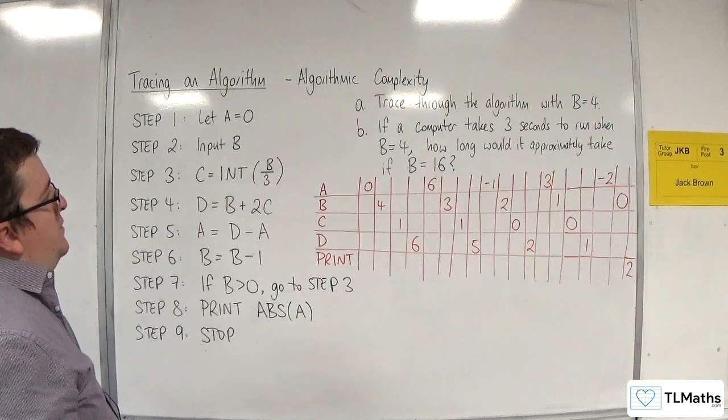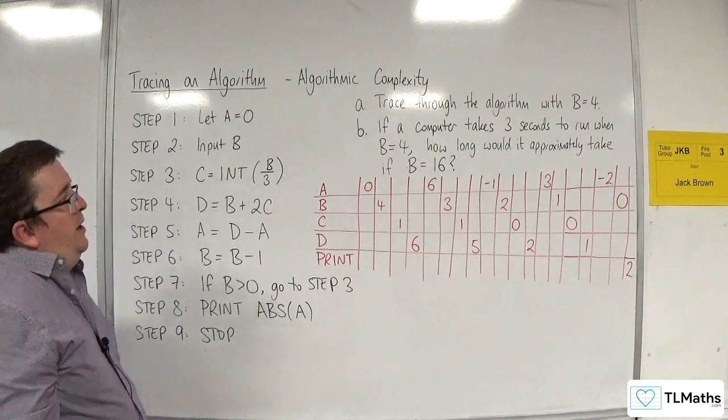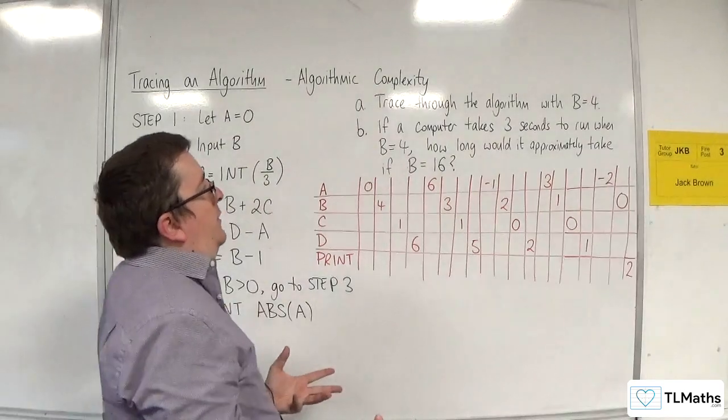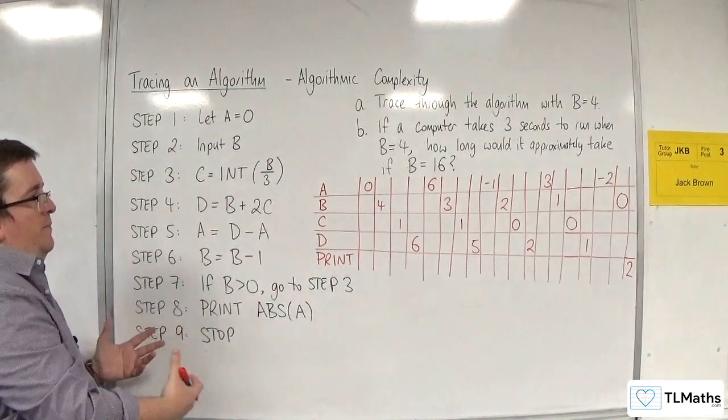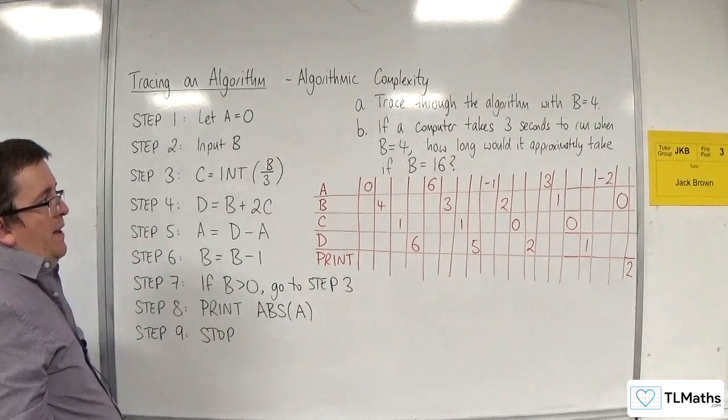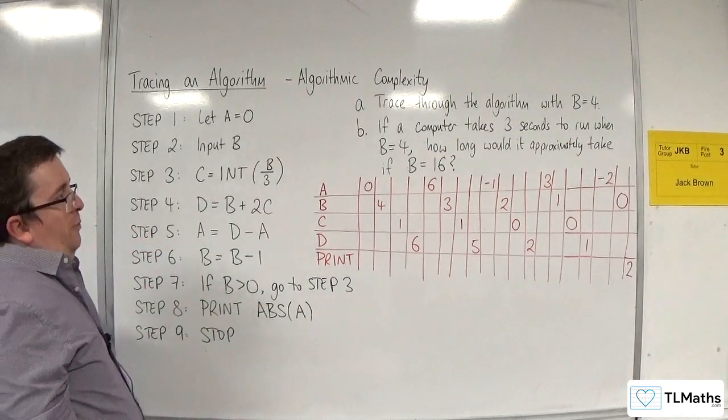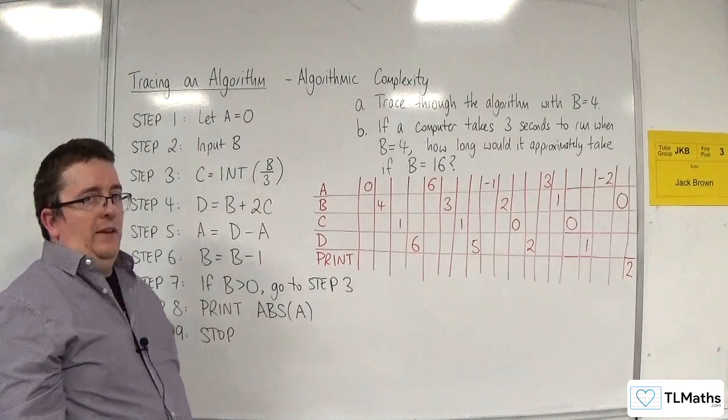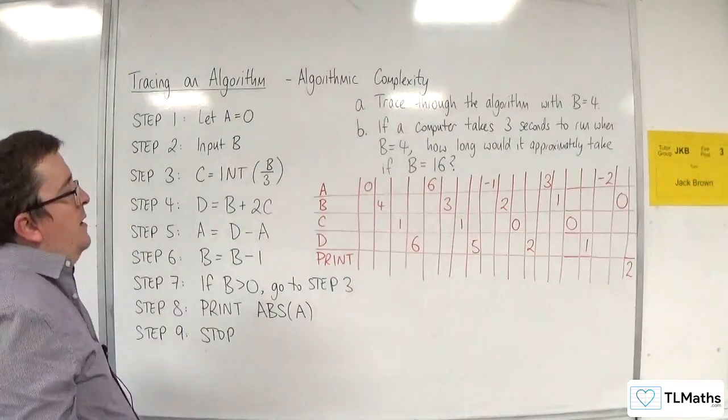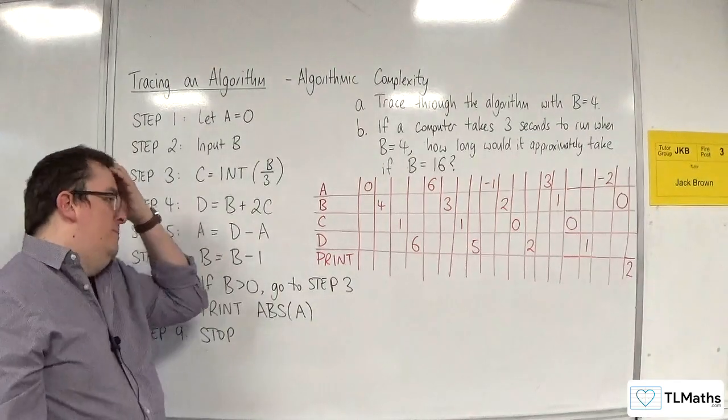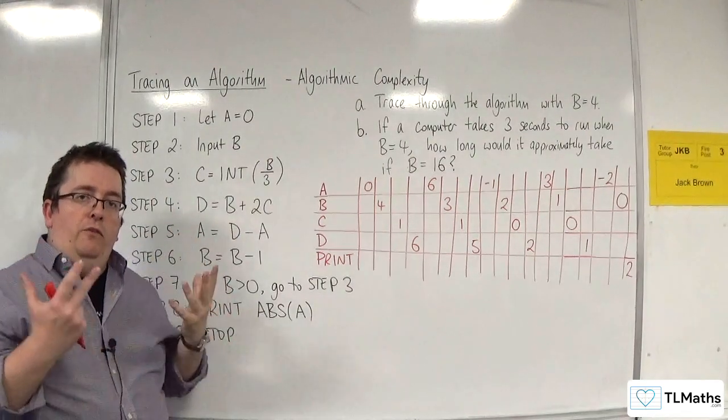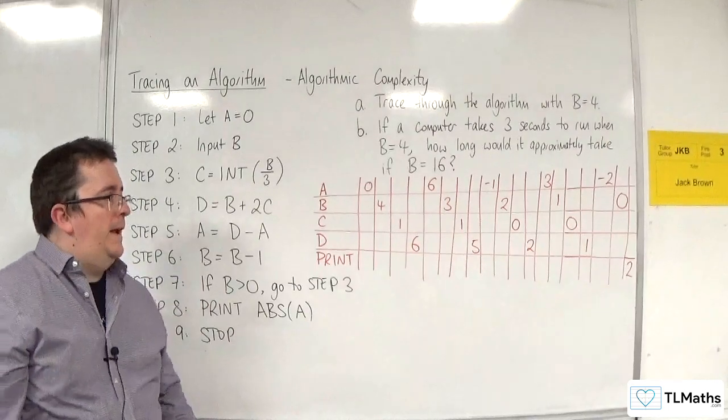So, if a computer takes 3 seconds to run when b is 4, if it took all of that algorithm, and it took 3 seconds to run it, how long would it approximately take if b is equal to 16? Now, what you need to consider here is, what is the algorithmic complexity of this algorithm?